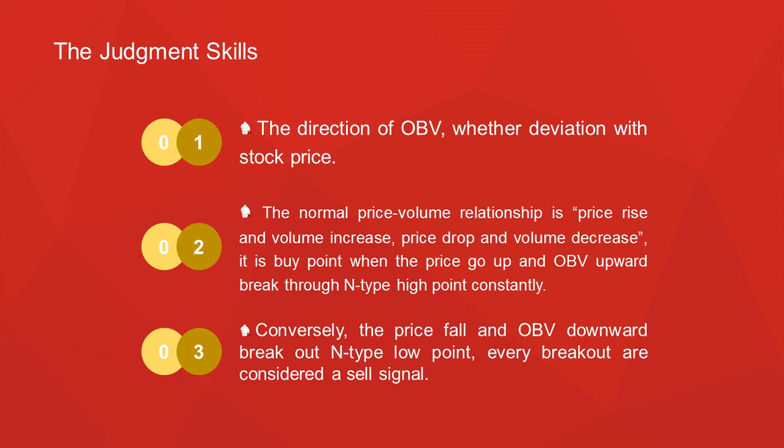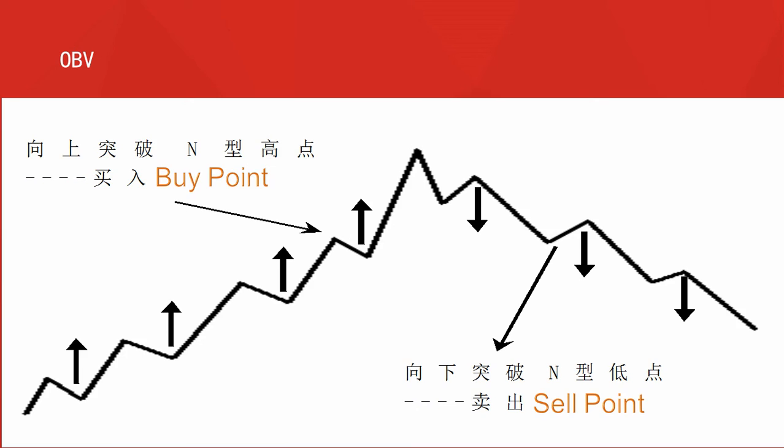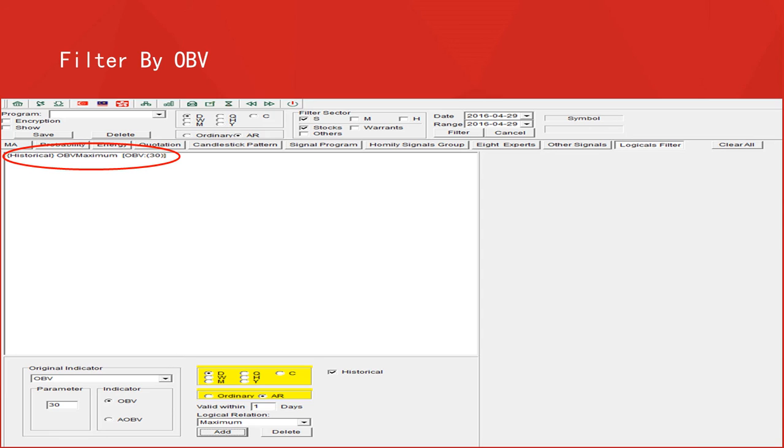Every breakout of the N-type high point is considered a buy signal. Conversely, the price forward and OBV downward breaking through the N-type low point is a sell signal. Here is an N-type: if you see OBV break up through the N-type high point, that's the buy point. This is another N-type — OBV breaking through the N-type high point is a buy point. If the OBV falls below the N-type low point, that's the sell point. Here is another sell point, and another. How to filter by OBV: click OBV (energy indicator), then set 30-day OBV maximum as historical — this means the rising energy is strong, indicating strong stocks.